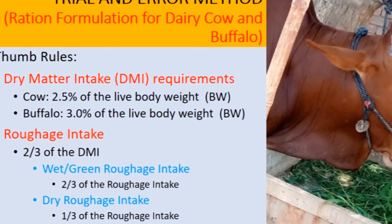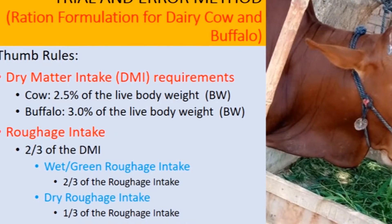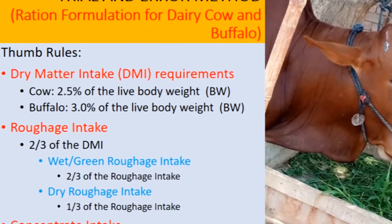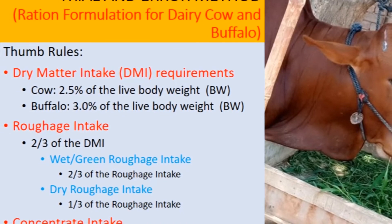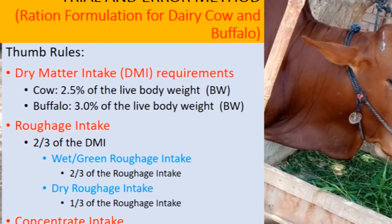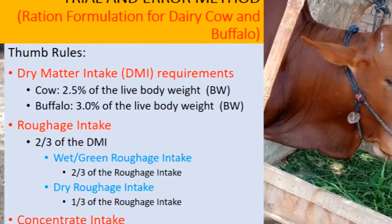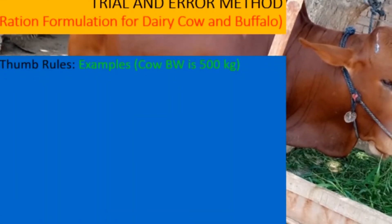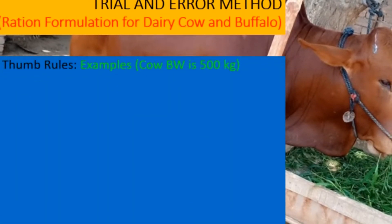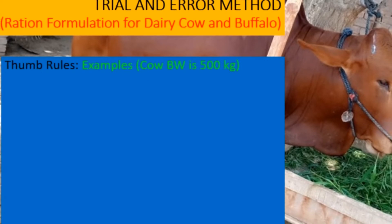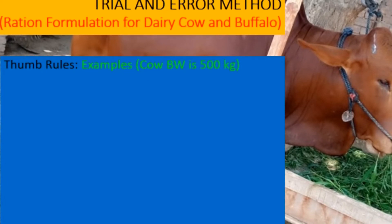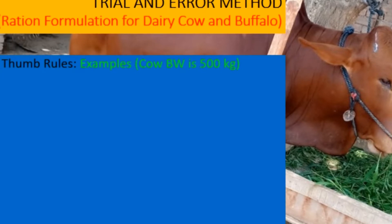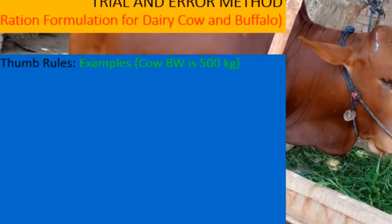A question arises: what should be done in the case of TMR — Total Mixed Ration? In the case of TMR, all dry matter intake should be met through the TMR, because TMR contains both concentrate and roughage components.